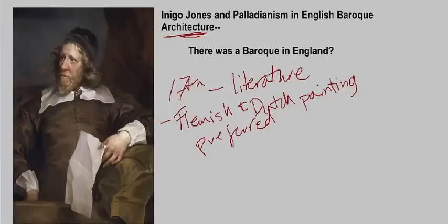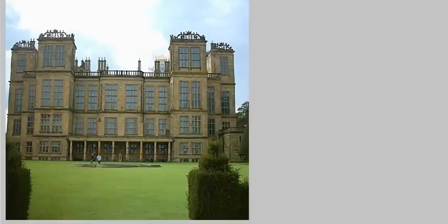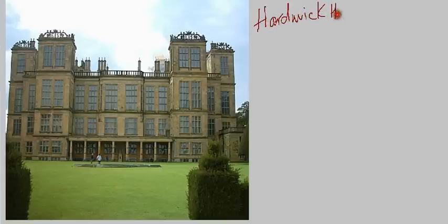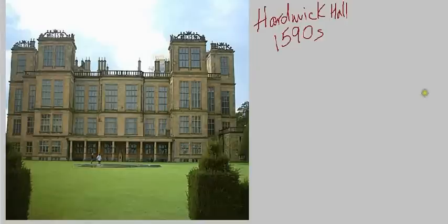Just to get a sense of where we are in terms of English architecture at the time, let's take a look at an example of a building from the late 16th century. This building is Hardwick Hall, from the 1590s. This is a pretty representative example of the prevailing style of English architecture before the contributions of Inigo Jones and other Baroque architects in England.